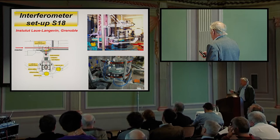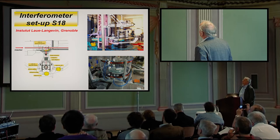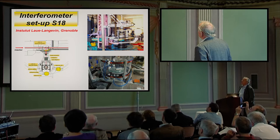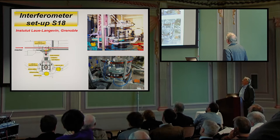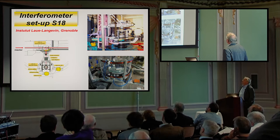But that works now routinely, mainly at the ILL, at the Langevin Institute in Grenoble. Neutrons from the core are along a neutron guide, they are monochromatized, and then they come to the interferometer place which is shown here. Then there are the detectors where the events are counted.